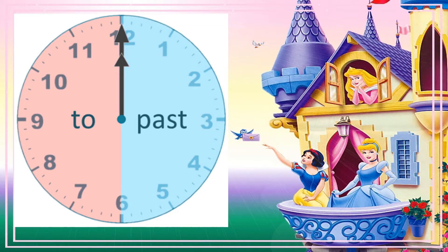If the minute hand was pointing at the two, that means it will be ten minutes past the hour. If the minute hand was pointing at the eleven, which is on the other half of the clock, that means it will be five minutes to the next hour.